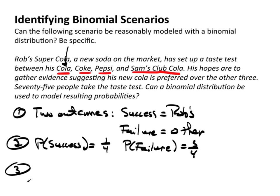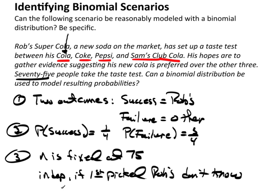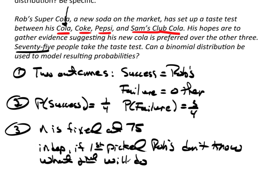And then I need the N, independent, identical trials. Well, N is fixed at 75 people. They're independent. I'll say just as an example, if first picked Rob's, don't know what second will do. I'm not looking for dissertation here. Just briefly, what is it you're thinking? How do you know they're independent?